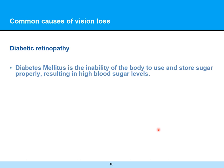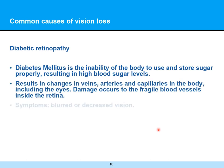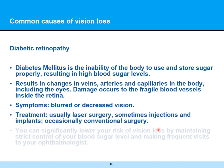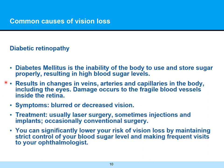Diabetes is another major cause of vision loss. Diabetes mellitus is the inability of the body to use and store sugar properly, resulting in high blood sugar levels and changes in veins, arteries, and capillaries throughout the body, including the eyes. Damage occurs to the fragile blood vessels inside the retina, causing symptoms of blurred or decreased vision. Treatment for diabetic retinopathy is usually laser surgery, but sometimes injections, implants, or conventional surgery are needed. Prevention is key — an ounce of prevention is worth a pound of cure. You can significantly lower your risk by maintaining strict control of your blood sugar and making frequent visits to your ophthalmologist.